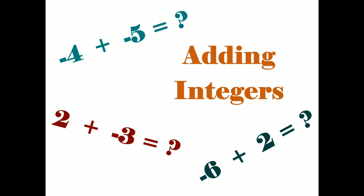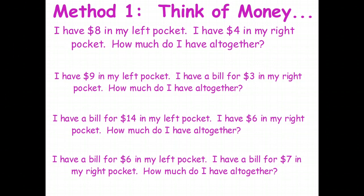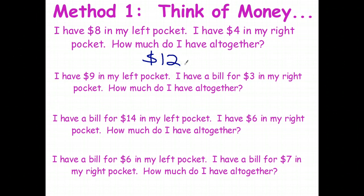I'm going to show you three different methods and you can pick the one that makes the most sense to you. The one I like when first starting is to think of money. If I've got money in my pocket, that's a positive. If I've got a bill in my pocket, that's a negative. So if I have eight dollars in my left pocket and four dollars in my right pocket, altogether I have eight plus four — a total of twelve dollars.